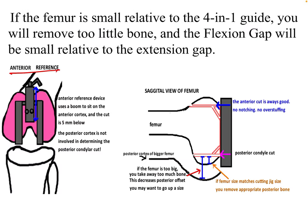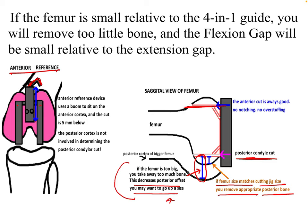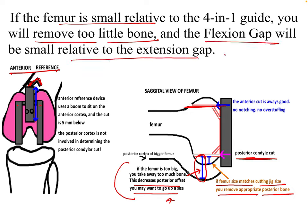In anterior referencing, the guide sits on the anterior cortex and is fixed with pins. Once the anterior cut is fixed, the posterior condyle cut is taken. If the femur is too big, a large quantity of bone is removed posteriorly, decreasing the posterior offset and requiring an increase in implant size. If the femur matches the cutting side, the appropriate amount of posterior bone is removed. If the femur is too small, too little bone is removed and the flexion gap will be small relative to the extension gap.